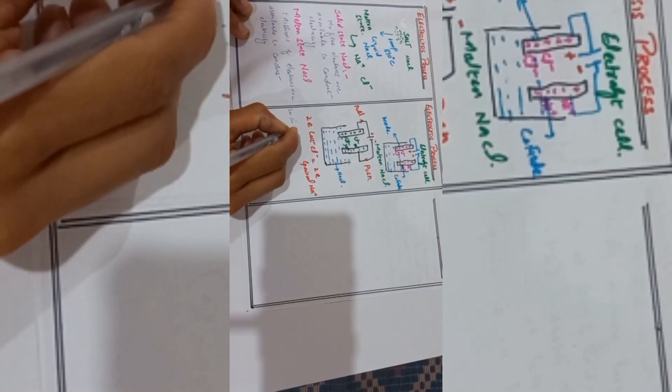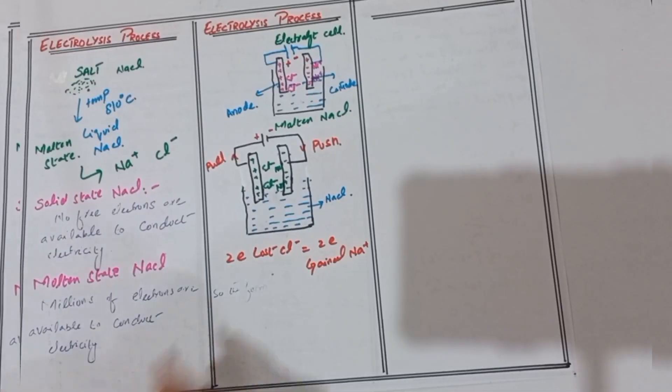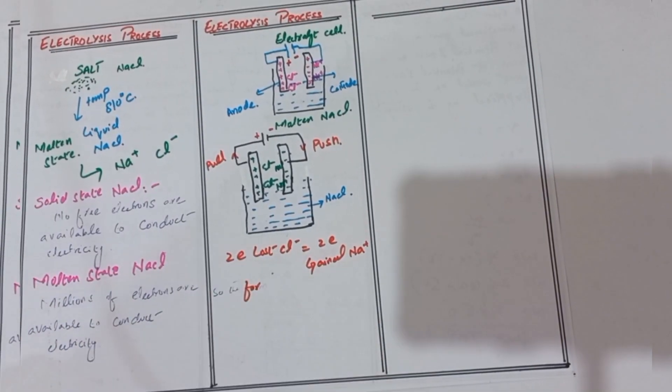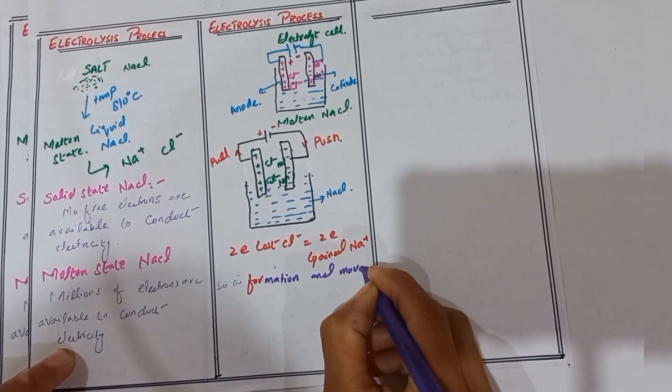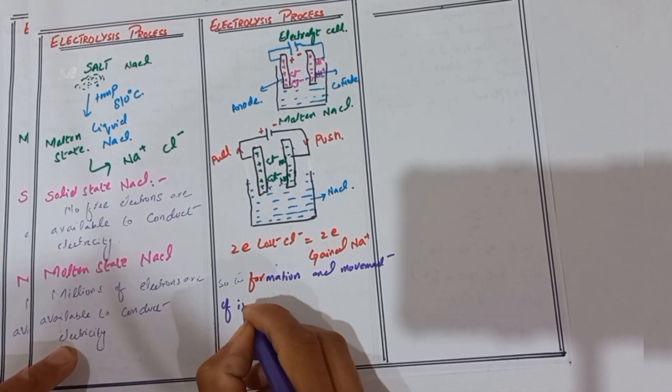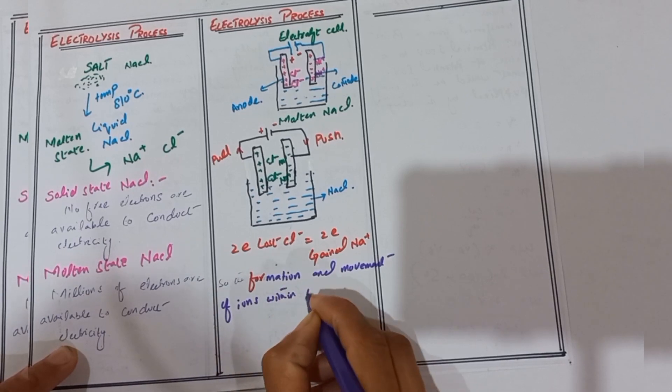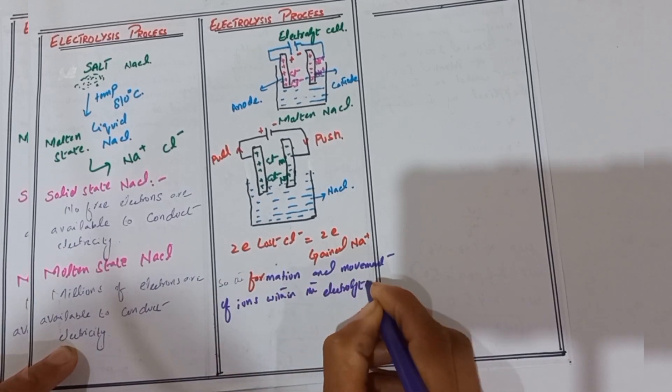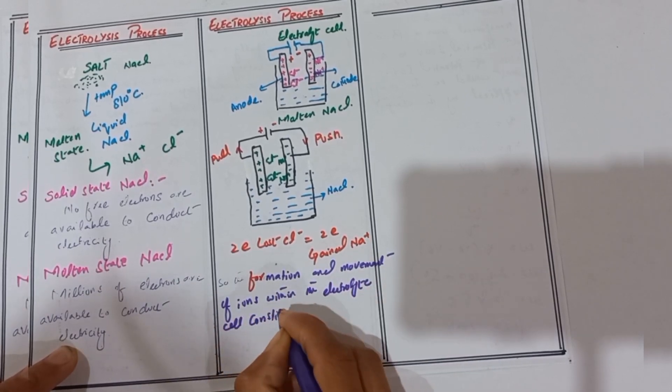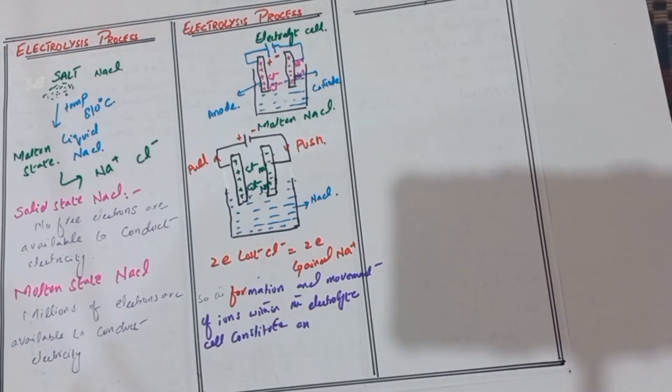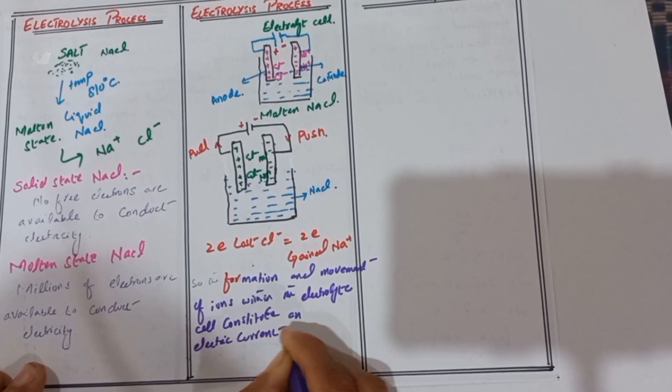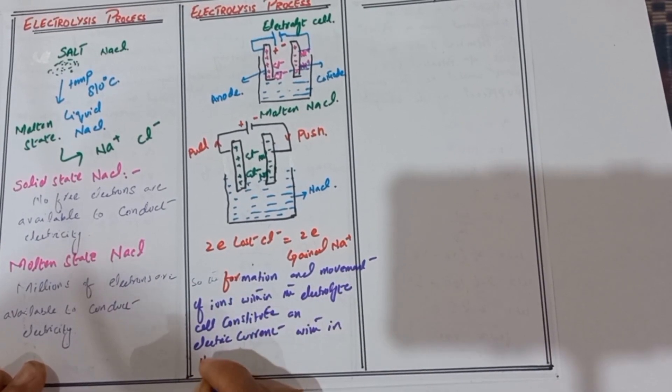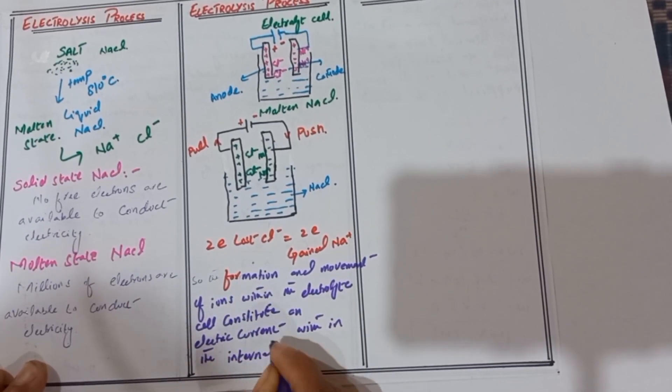The formation and movement of ions within the electrolyte cell constitute an electric current in the internal circuit.